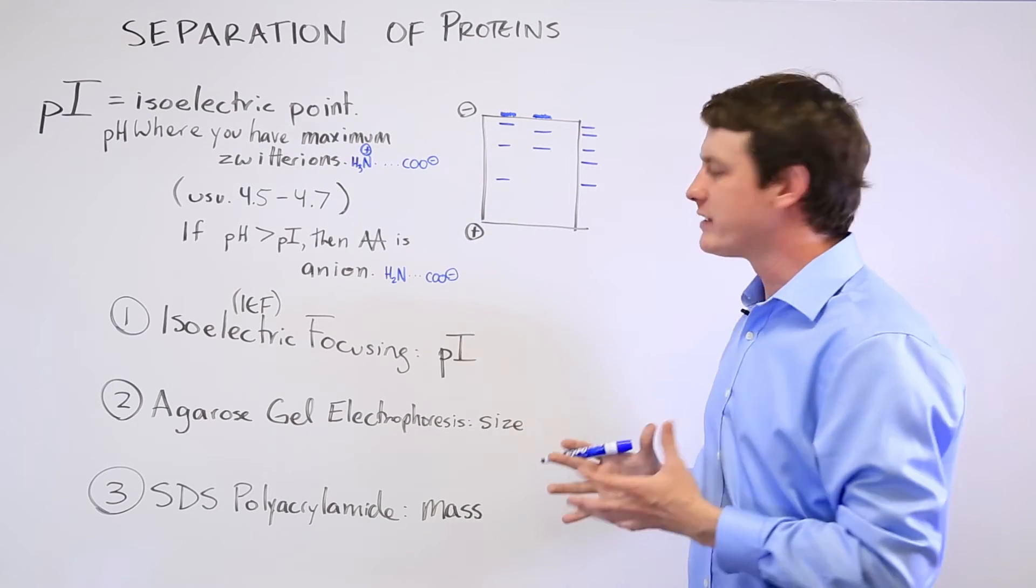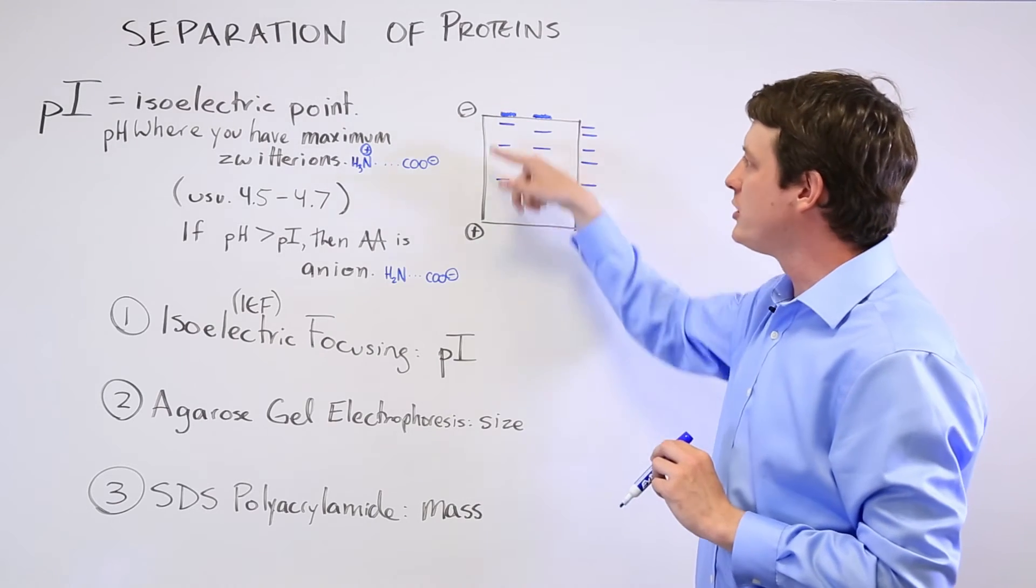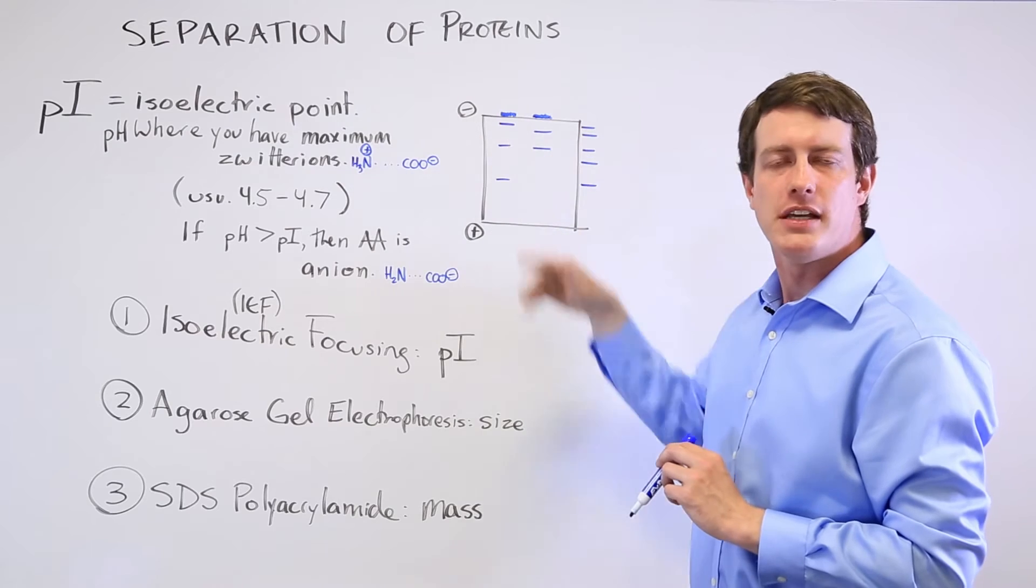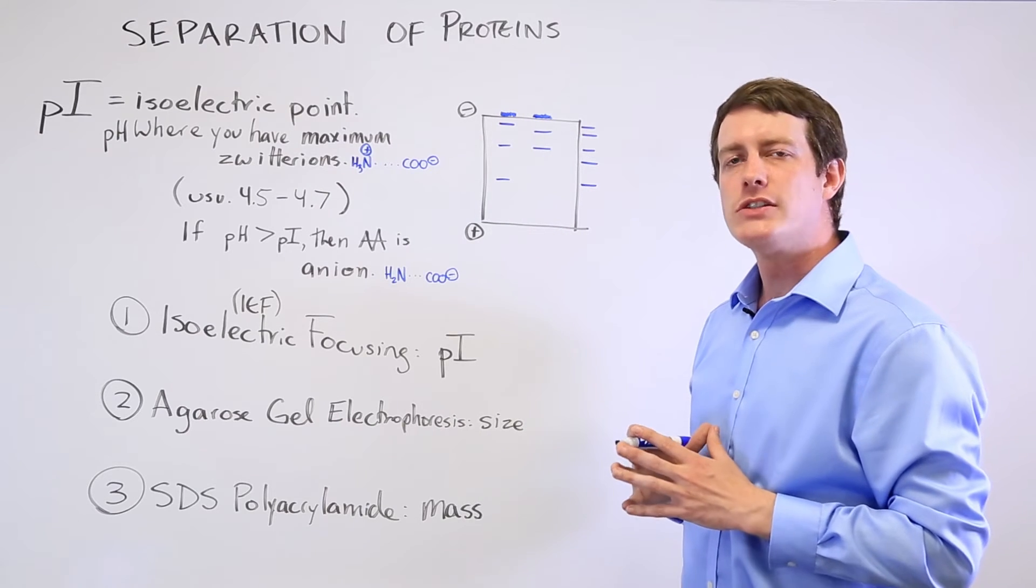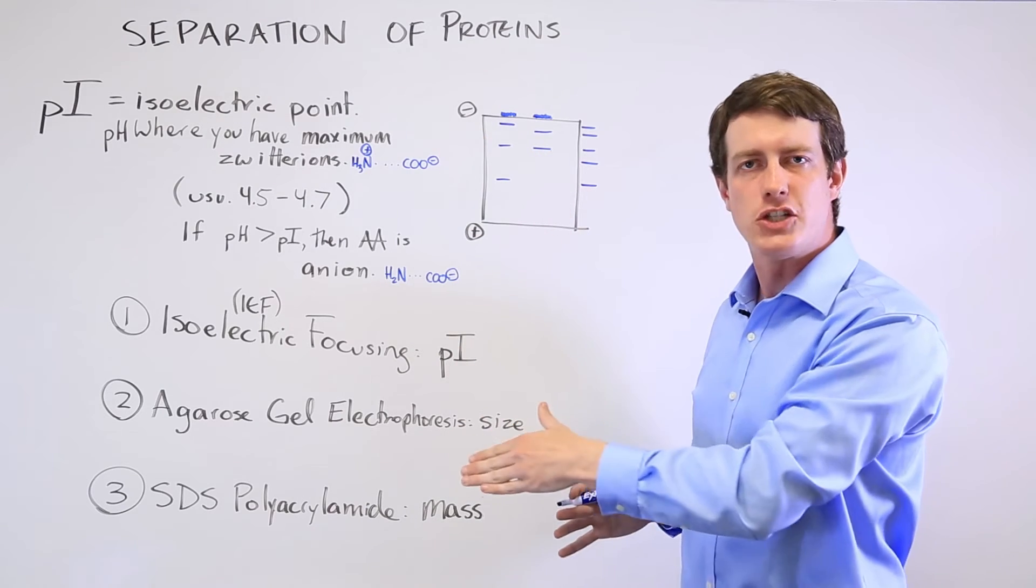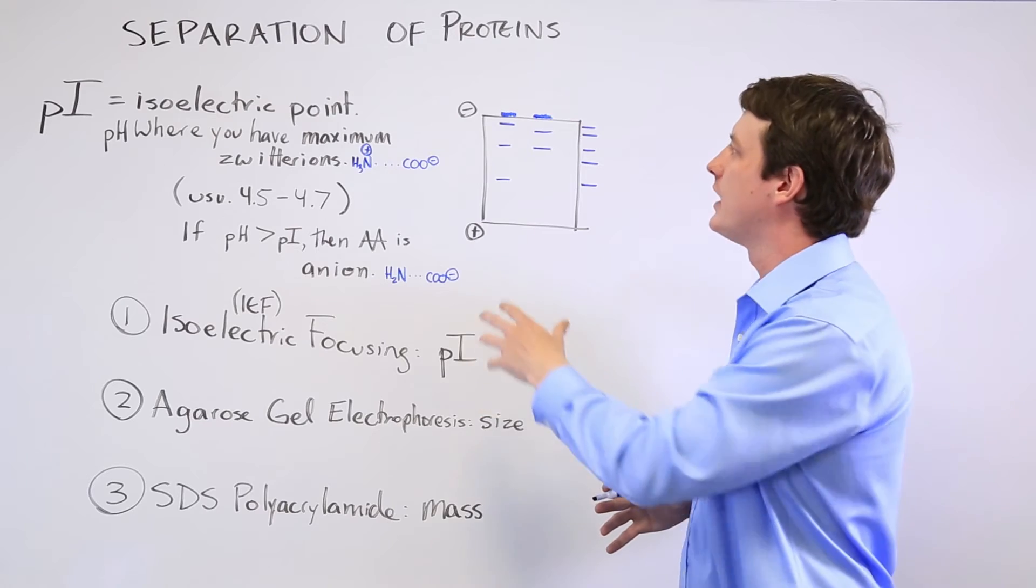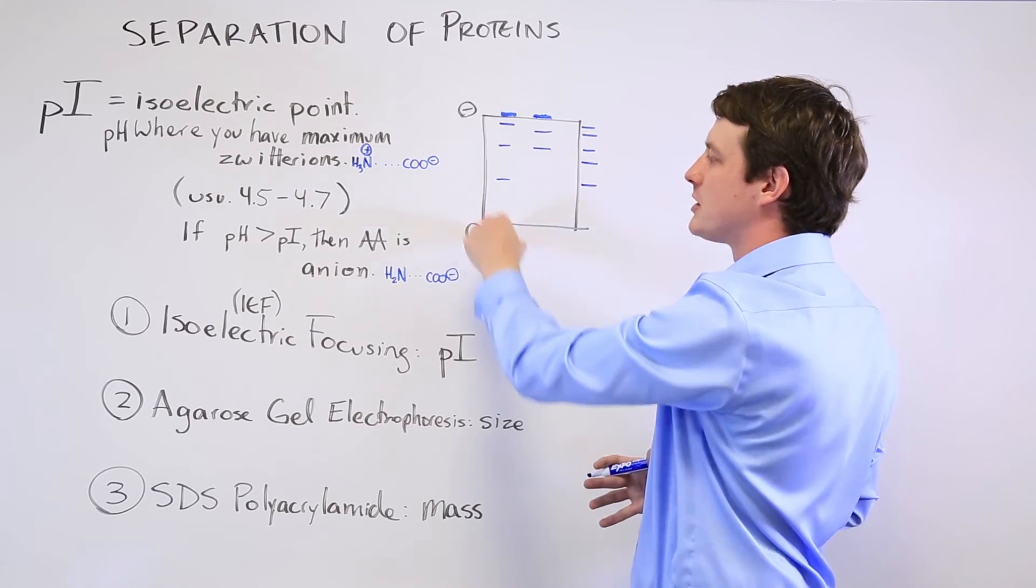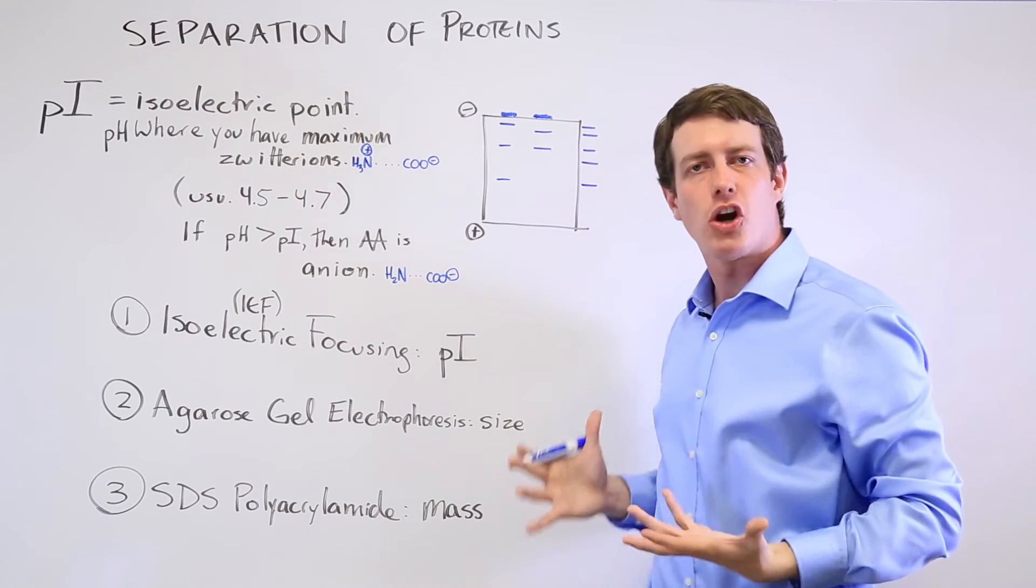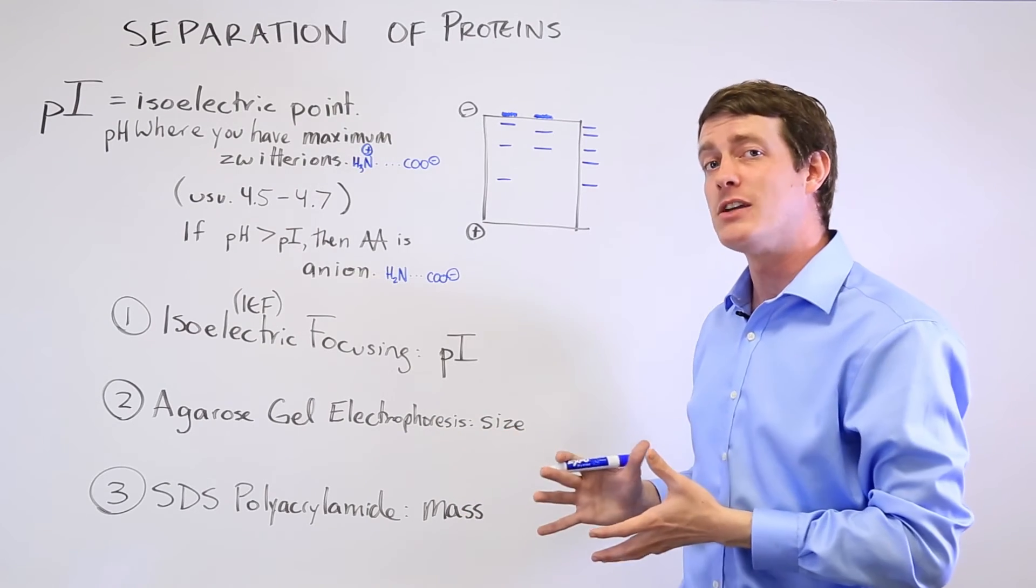Agarose gel electrophoresis is similar, except that it doesn't use a pH gradient. There's not a gradient of pH within this medium. And so what it's doing is testing the size. How quickly does it move through this gel? And the ones that move more quickly are of a smaller size, and so they're more readily able to move toward that positive charge that any negatively charged protein or amino acid would be attracted to.